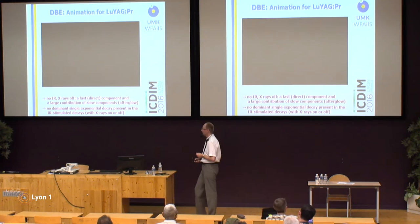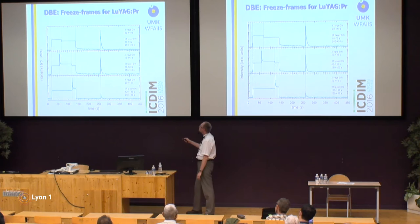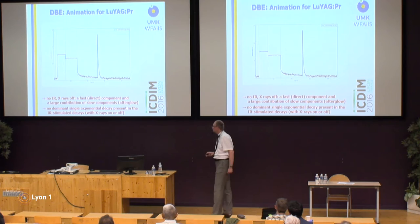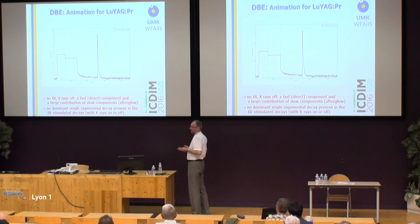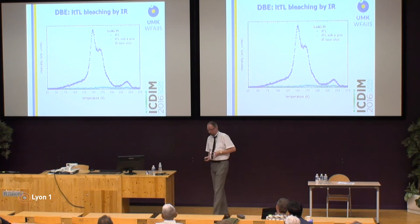If there is no infrared radiation and we switch off the X-rays, we see a complicated decay. Looking at this freeze frame: there is no laser, we have only X-rays and we switch the X-rays off — there is a complicated multi-component decay. We suspect there is some direct component and afterglow. However, when we stimulate the crystal with infrared light, then it doesn't matter if the X-rays are on or off — we observe this kind of decay.